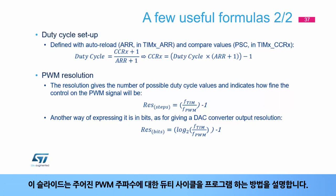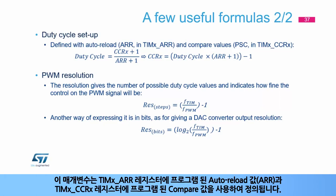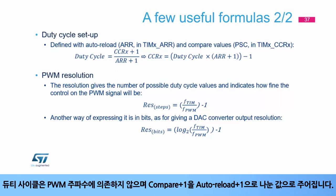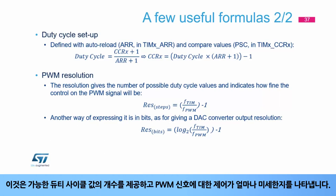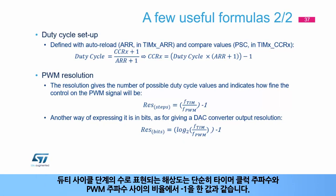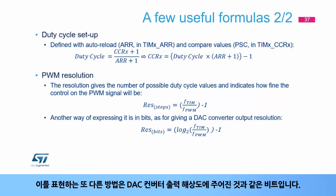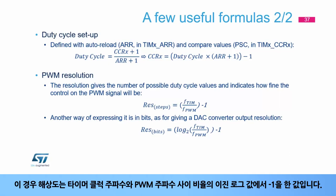The duty cycle is defined using the auto-reload value ARR in the TIMx_ARR register and the compare value in the TIMx_CCRx register. The duty cycle is given by (compare value + 1) / (auto-reload value + 1). The PWM resolution gives the number of possible duty cycle values and indicates how fine the control on the PWM signal will be. The resolution expressed as duty cycle steps is the ratio between the timer clock frequency and the PWM frequency, minus 1. Expressed in bits (like a DAC converter output resolution), it is the base-2 logarithm of that ratio.